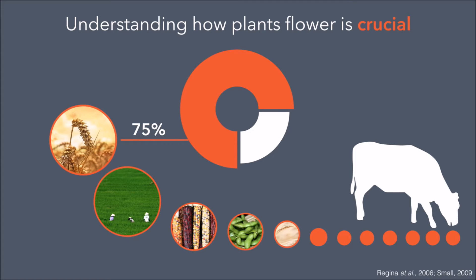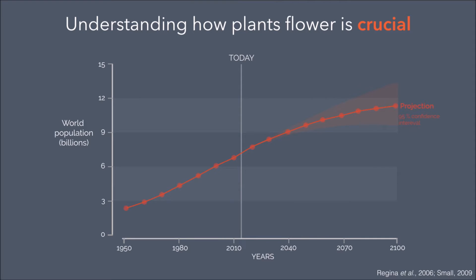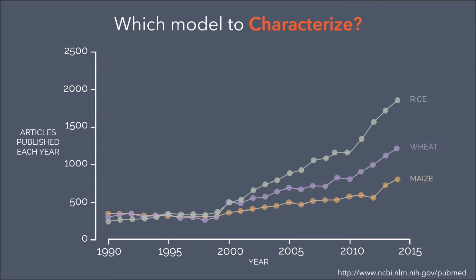In most cases, the parts of plants consumed are either fruits or seeds. Altogether, in the context of the ever increasing world population, a better understanding of the molecular mechanisms controlling the initiation of flowering is crucial. It is therefore not surprising that a lot of efforts converge toward the analysis of agronomically important plants, such as rice, wheat and maize.